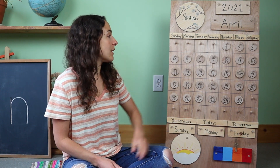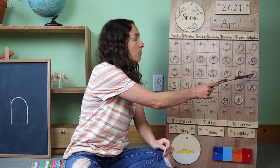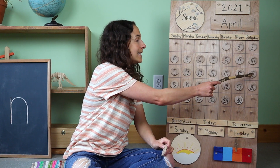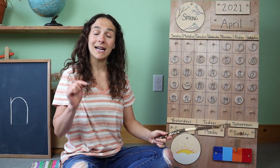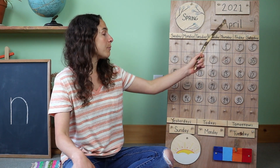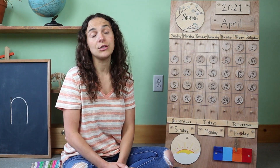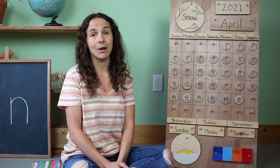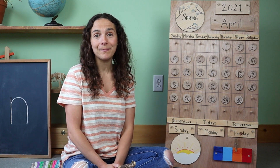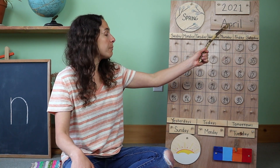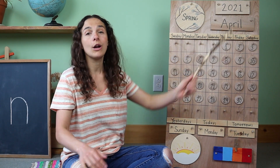Let's move the chip over from the number 16 — that was the last time that we met. So we'll move it from 16, 17, 18, and put it on the number 19 because today is April 19th, 2021. Friends, will you say the date one more time with me? Today is April 19th, 2021.